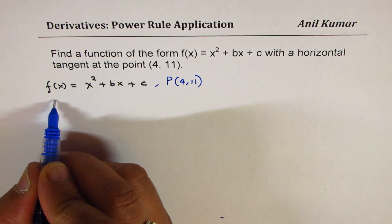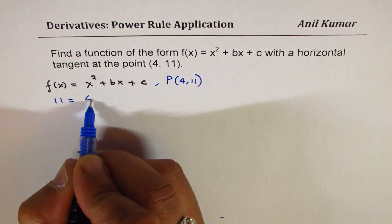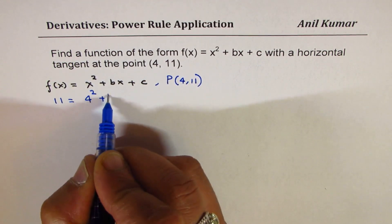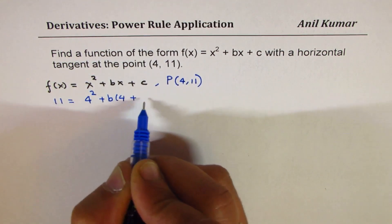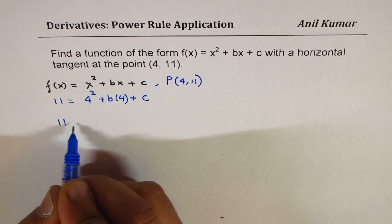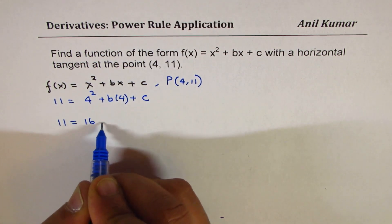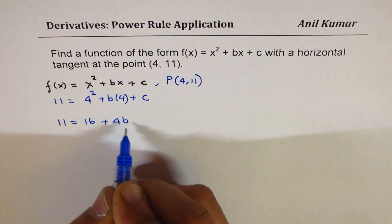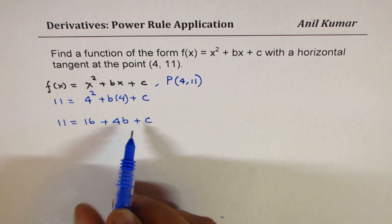So that gives you the equation as 11 = 4² + b(4) + c. So you get one equation, which could be written as 11 = 16 + 4b + c. Rearranging, you can write this as bringing 16 to the left side,